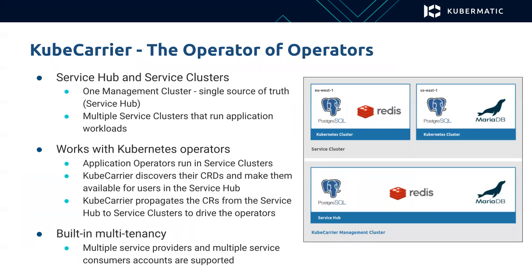Let's talk about Kube-Carrier in more detail. There are two different types of clusters in Kube-Carrier. One is the management cluster, which we call the service hub. The other type is the service cluster, which is registered by service providers and runs application workloads and service instances. Kube-Carrier works with Kubernetes operators, meaning the application operators run on the service clusters.